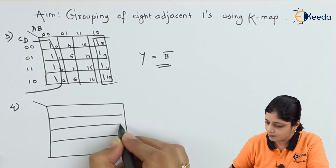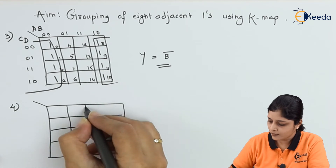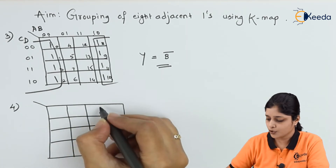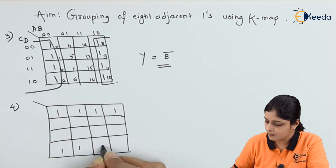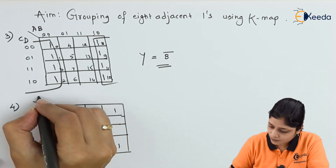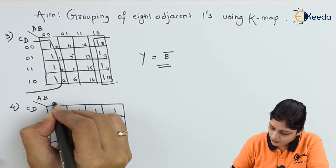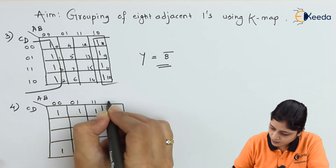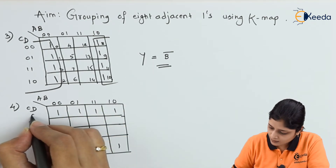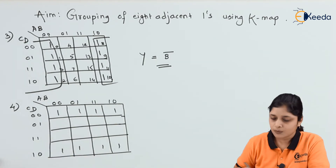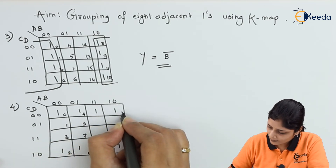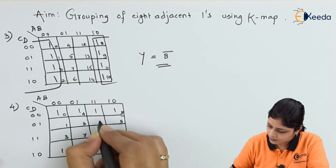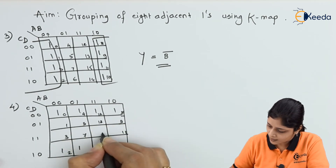Let's take the next example. According to the K-map rules, you have to follow the rules to obtain the minimized equation. Suppose the ones are arranged like this. Write the labels: A B C D with 0 0 0 1 1 1 1 0 and 0 0 0 1 1 1 1 0. Number the boxes 0 through 15.